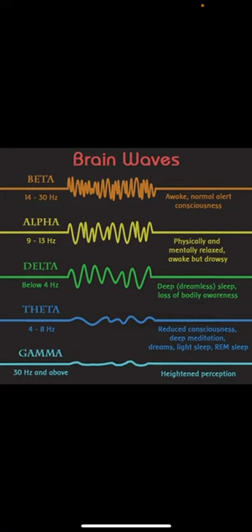Beta is 14 to 30 hertz. It's when we're awake, normal, alert, and consciousness. And again, see how it's very active, very tight together, up and down, up and down.